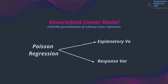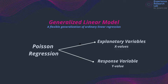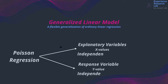Poisson regression helps analyze count data. It describes which explanatory variables (X values) have a statistically consequential effect on a given response variable (Y value), which is the count. In other words, frequently used in research, Poisson regression explains which independent variable has a statistically significant effect on the dependent variable.